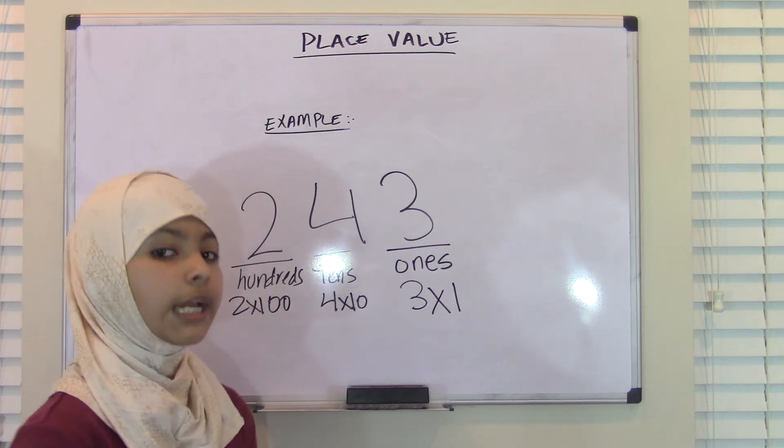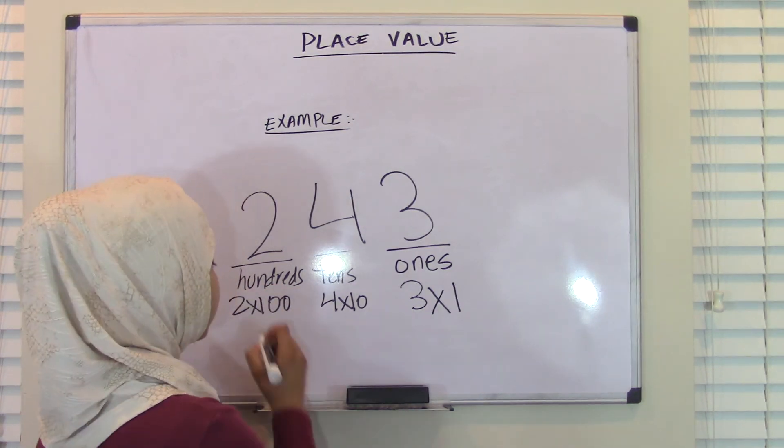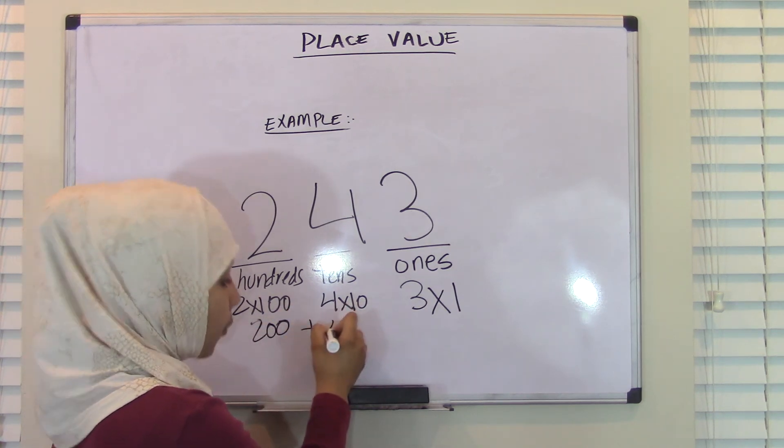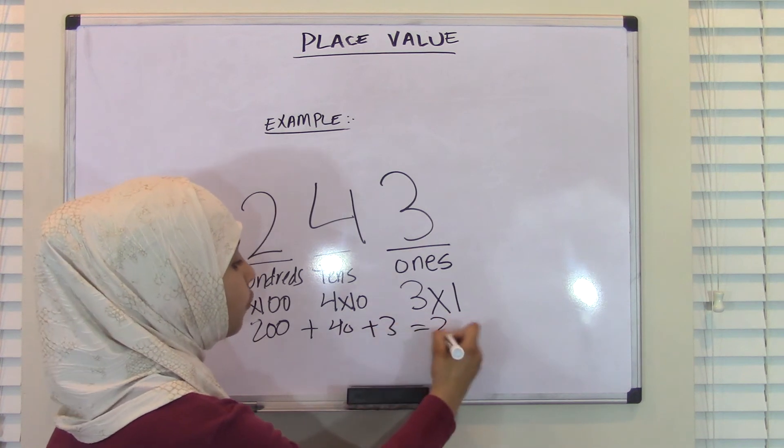Now, if you want to check this, you can always do addition. So, 2 times 100 is 200 plus 40 plus 3, which equals 243.